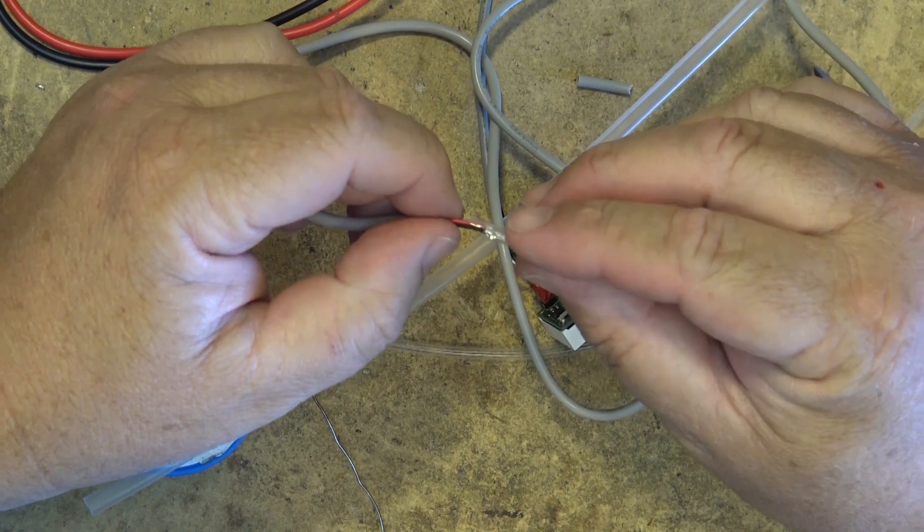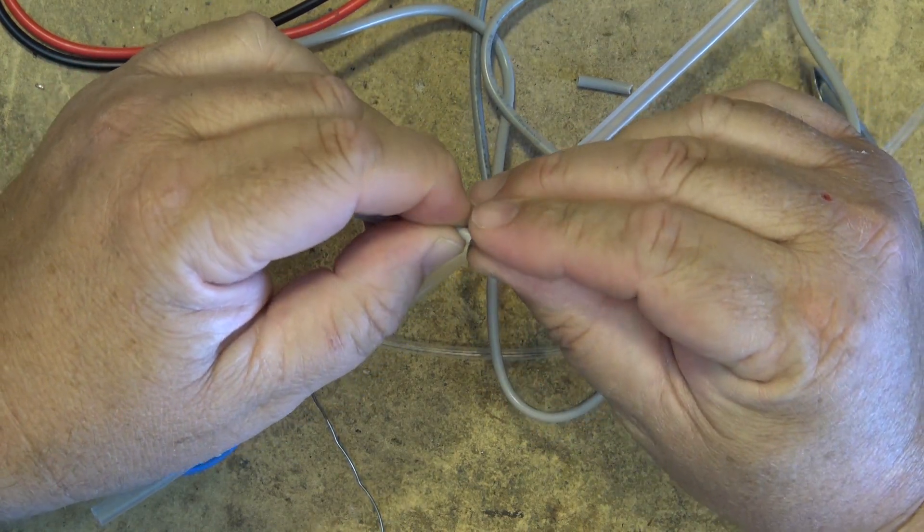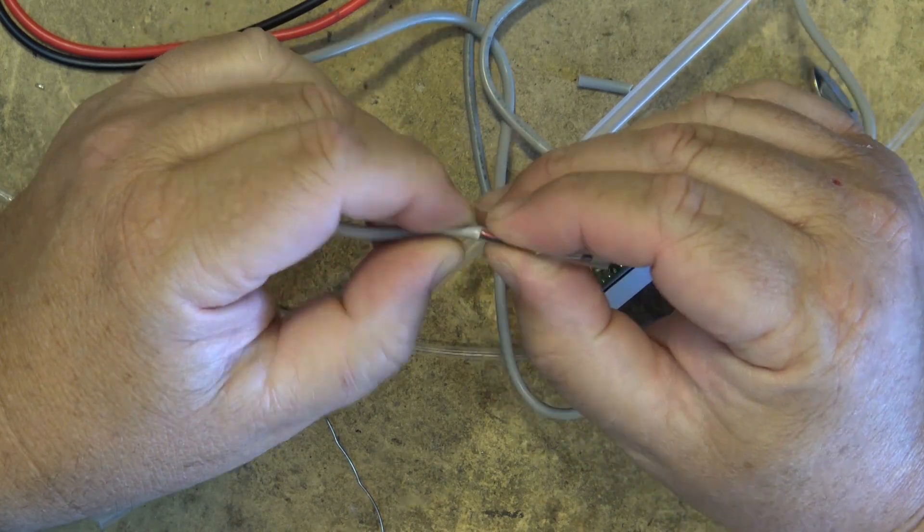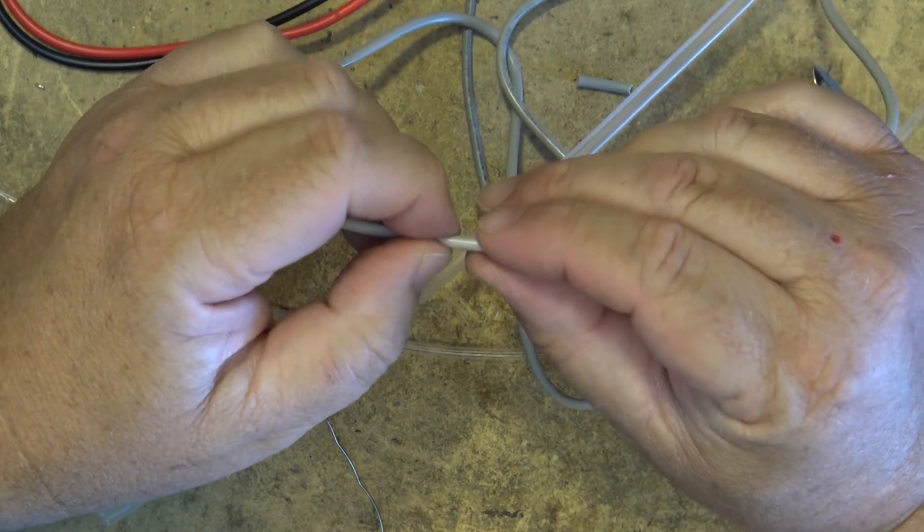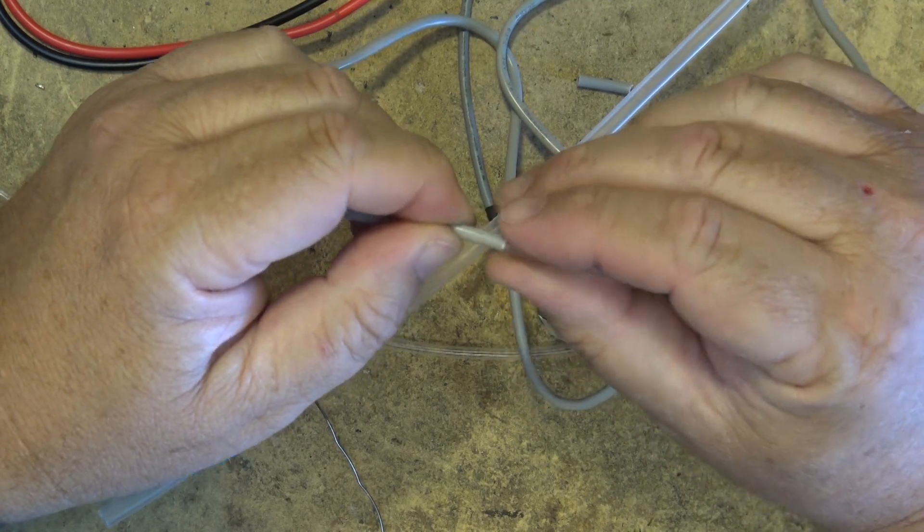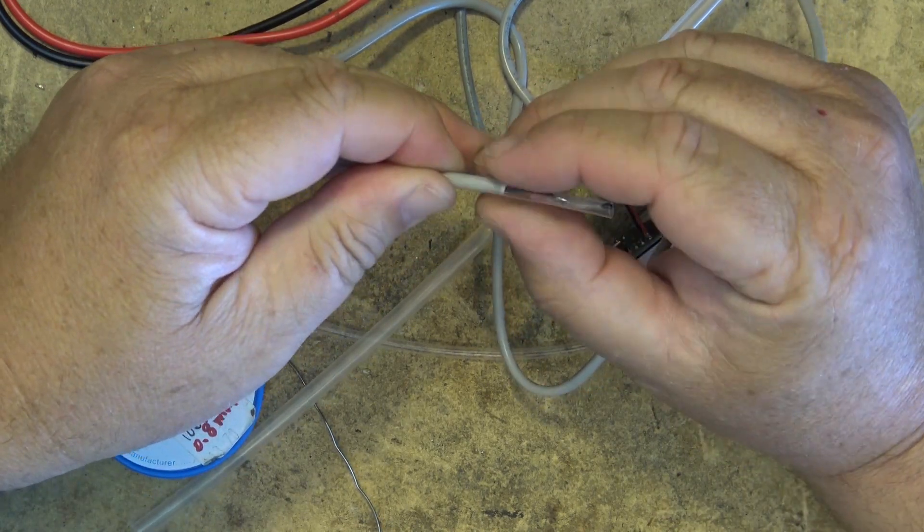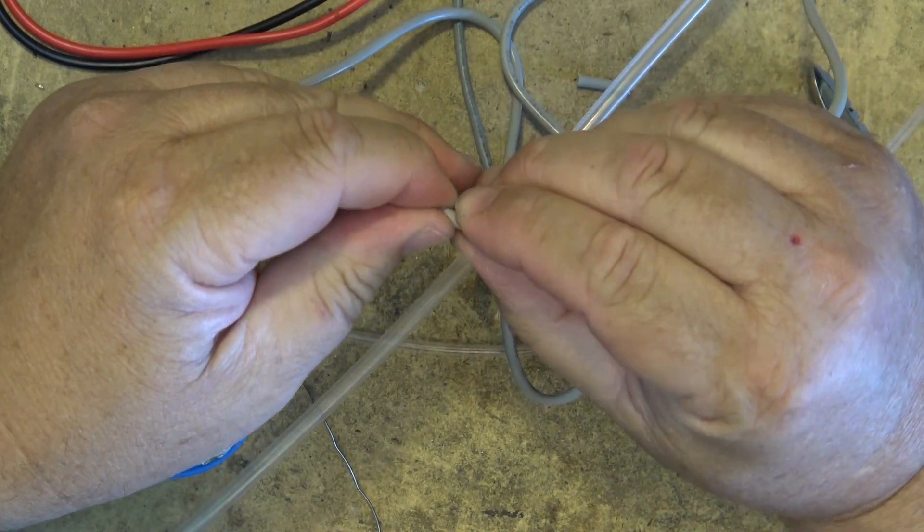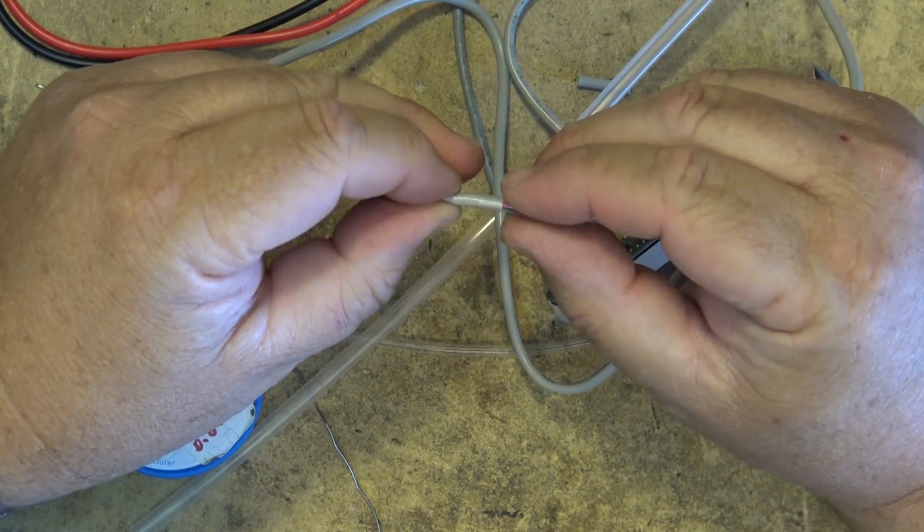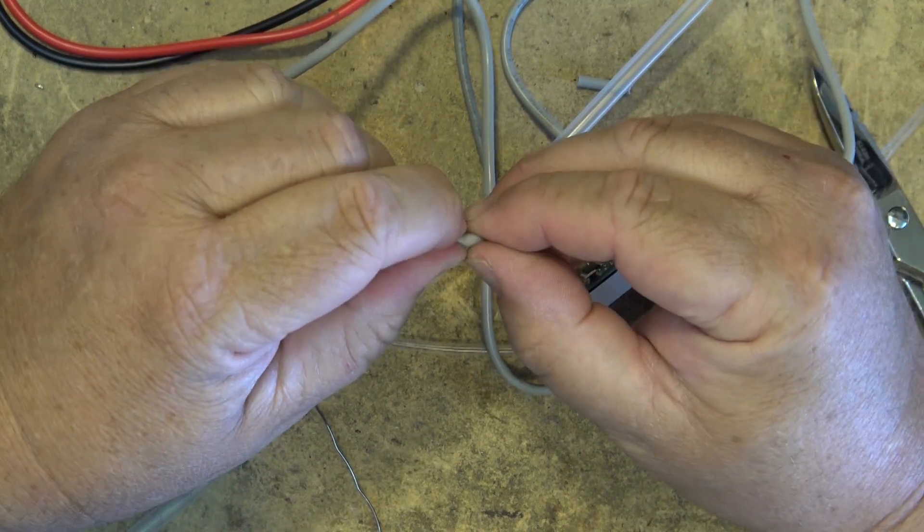So I'm just going to encapsulate not only the connections but the actual probe itself in some heat shrink tubing. This is to protect the connections and also to protect the actual temperature probe itself. I'm just going to leave the tip of the probe exposed so that I can get an accurate read on whatever I want to test the temperature on, but I want to cover everything else up with the heat shrink tubing.